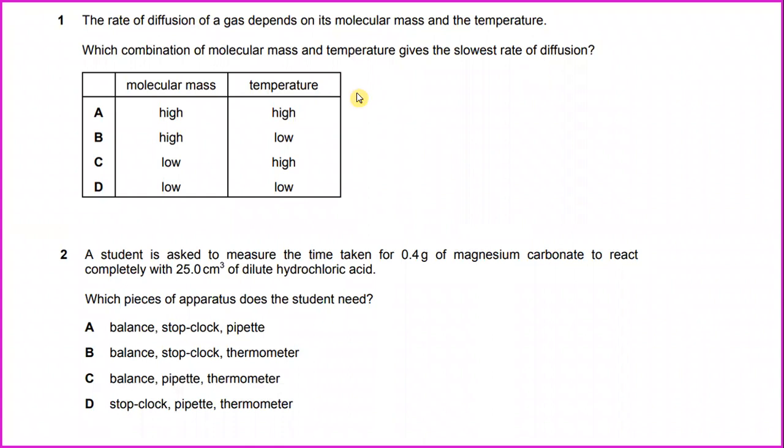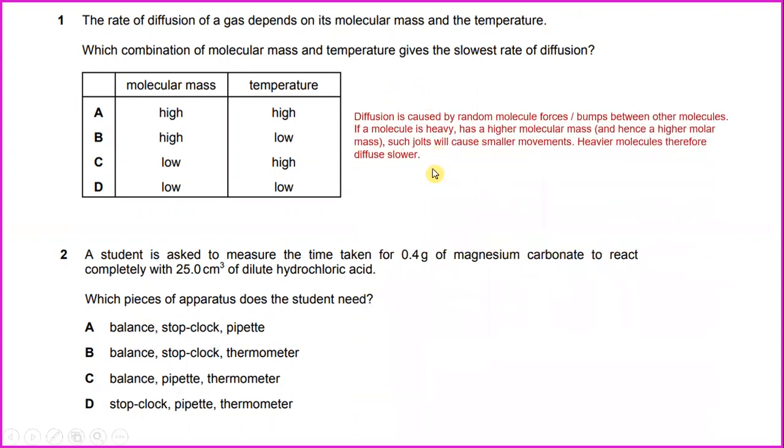Question number 1. The rate of diffusion of a gas depends on its molecular mass and the temperature. Which combination of molecular mass and temperature gives the slowest rate of diffusion? Diffusion is caused by random molecular forces between molecules. If a molecule is heavy, has a higher molecular mass and higher molar mass, such molecules will cause slower movements. Heavier molecules therefore diffuse slower. The answer is B: molecular mass is high and temperature will be low.